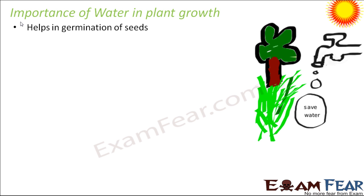First, water helps in germination of seeds. When seeds are sown on soil, we want each seed to form a small seedling that gradually grows into a plant. This process of germination requires water — it cannot happen without it. Under dry conditions, seeds will remain as seeds and get dried up. So formation of plants from seeds cannot happen without water.